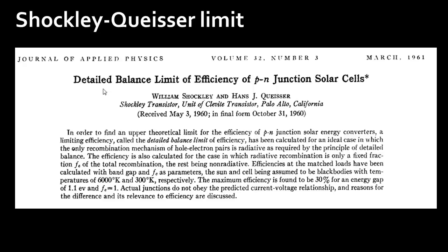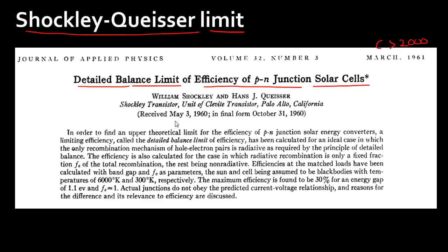I feel very excited to share one of my favorite papers, titled 'The Detailed Balance Limit for Efficiency of PN Junction-Based Solar Cells.' This is not just my favorite paper — it's one of the most highly cited papers in the field of semiconductors, cited more than 2,000 times. Sometimes this paper is also known as the Shockley-Queisser Limit.